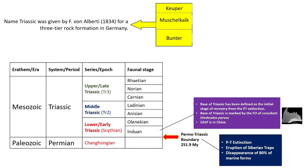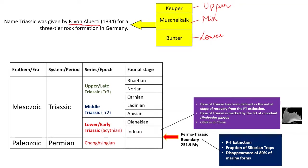The name Triassic was given by Von Alberti for a three-tier rock formation in Germany. The three-tier formation consisted of three layers: the lower one was the Bunter, the middle one was Muschelkalk, and the upper was the Keuper. On the basis of these three, Von Alberti gave the name Triassic.